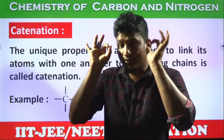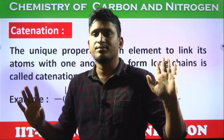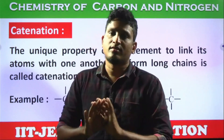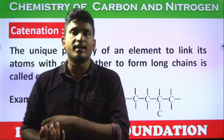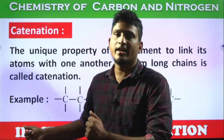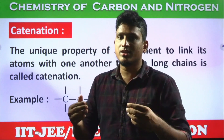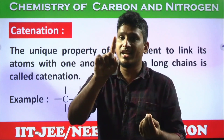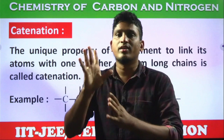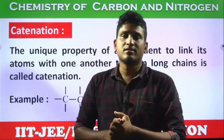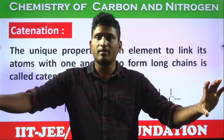Because of catenation, carbon can form an unlimited number of compounds. Is catenation shown by other elements? Not completely — some elements form only two or three compounds at most. Silicon also has tetravalency, but it doesn't show catenation like carbon because silicon's configuration is 3s1 3p3, and in the third shell there are empty d orbitals, which weaken the bonding and prevent formation of strong covalent bonds.